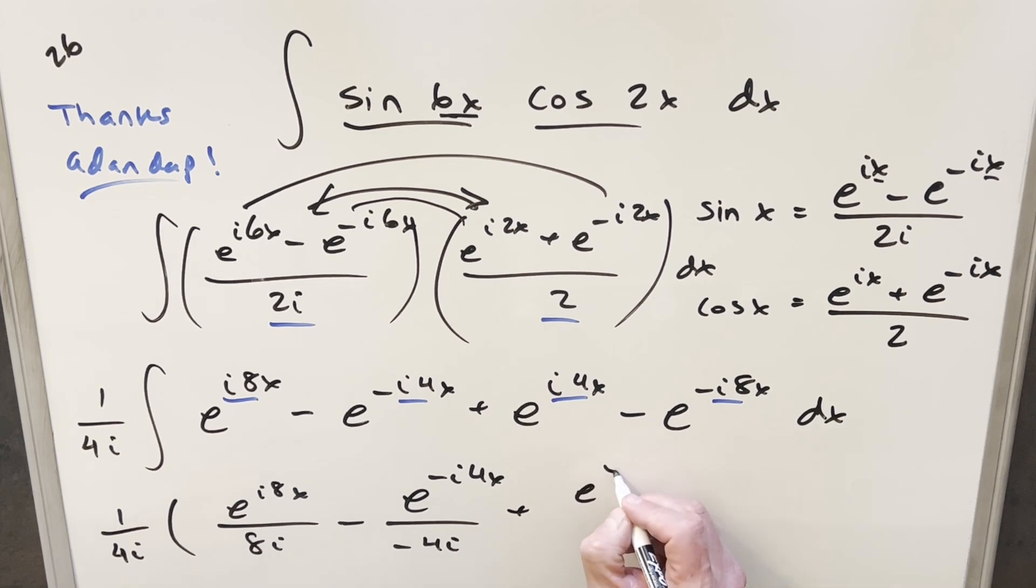Then we're going to have plus e^(i4x) with 4i here. And then minus e^(-i8x). And we'll have a minus 8i in the denominator. Minus is going to cancel with minus here. So that's going to give me plus. And the same thing over here. So everything is going to be positive.